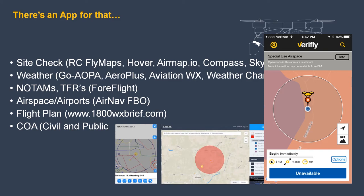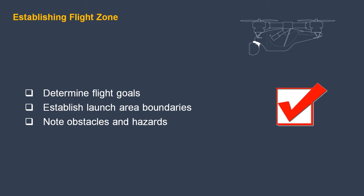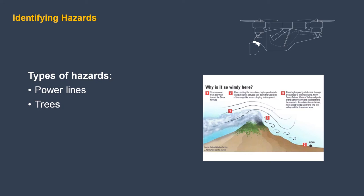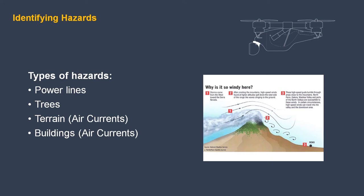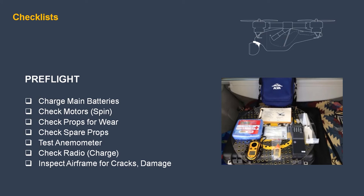For any flight, you need to determine your flight goals, establish launch area boundaries, and note any obstacles or hazards. Whether it's a local park or your own backyard, be aware of power lines, trees, and terrain. Unexpected air currents can come around buildings or over hills. Watch for weather fronts — air currents like downdrafts and quick changes in wind direction as fronts pass. Downdrafts can appear miles ahead of the edge of the cloud formation.